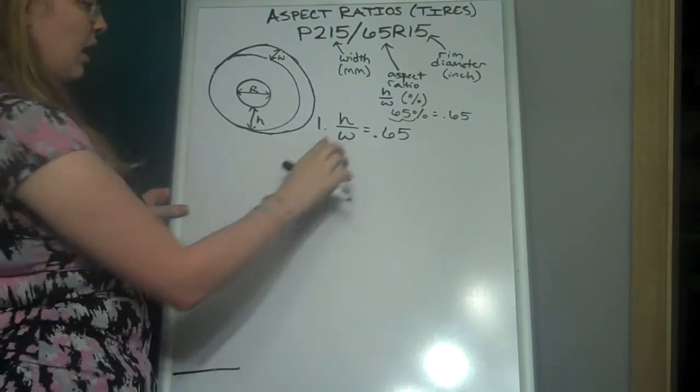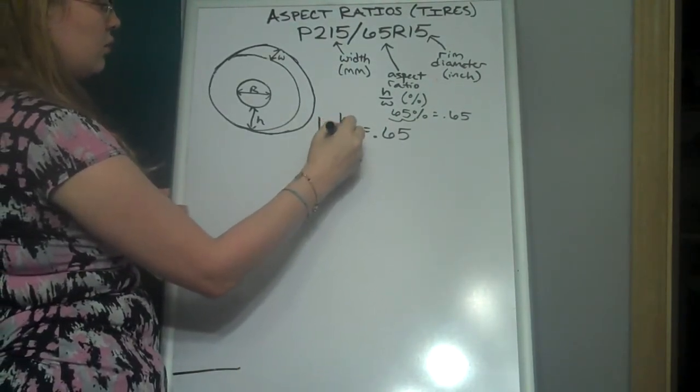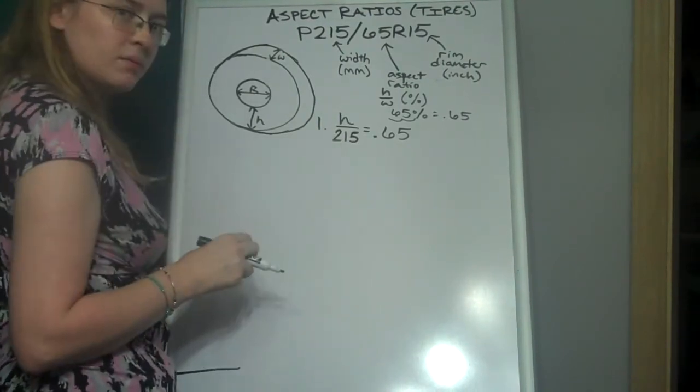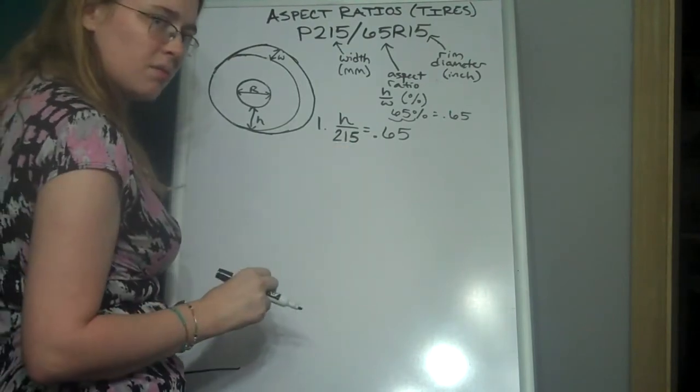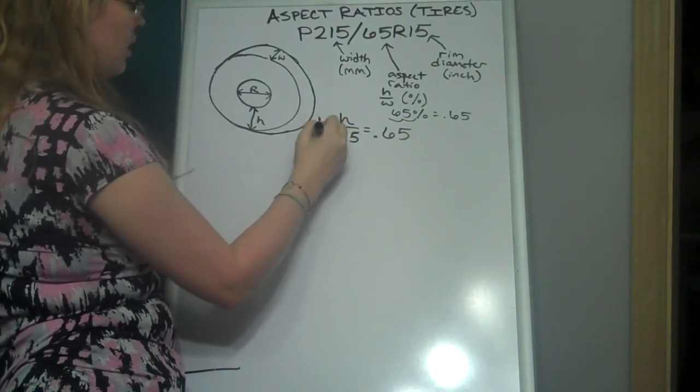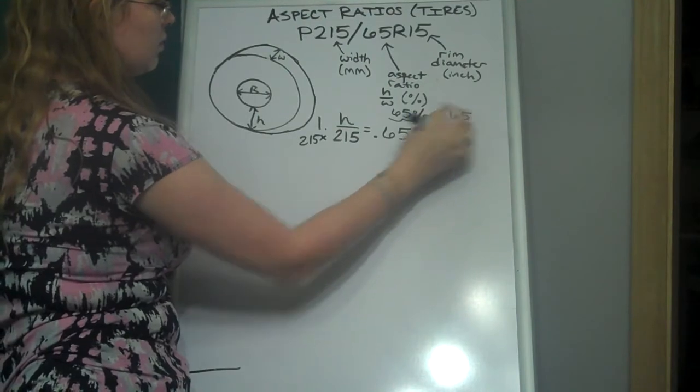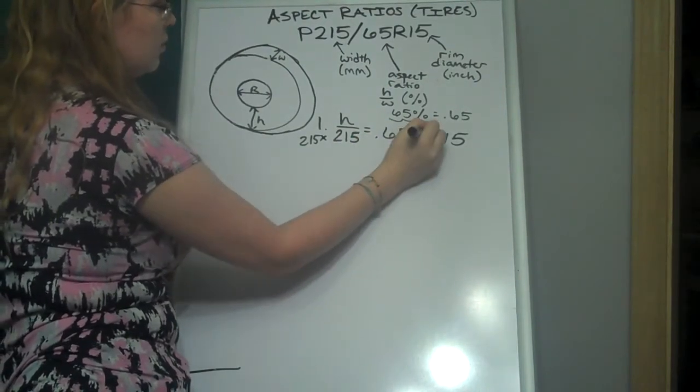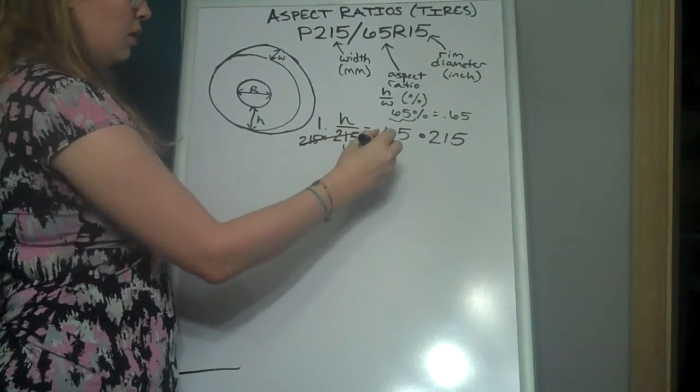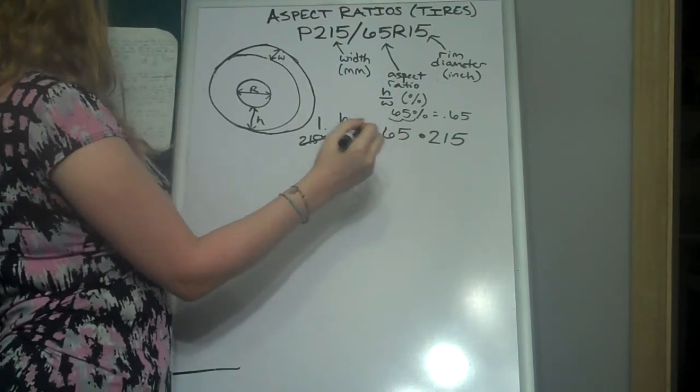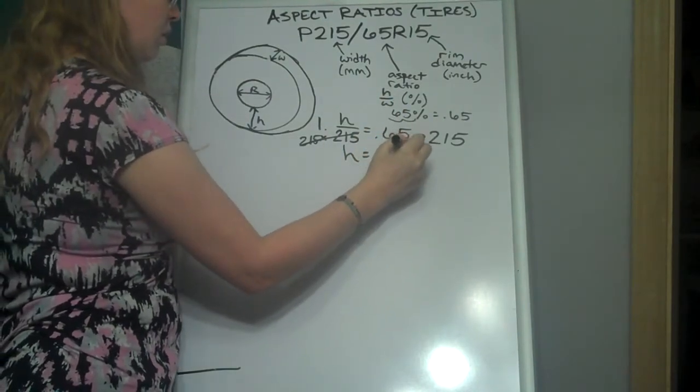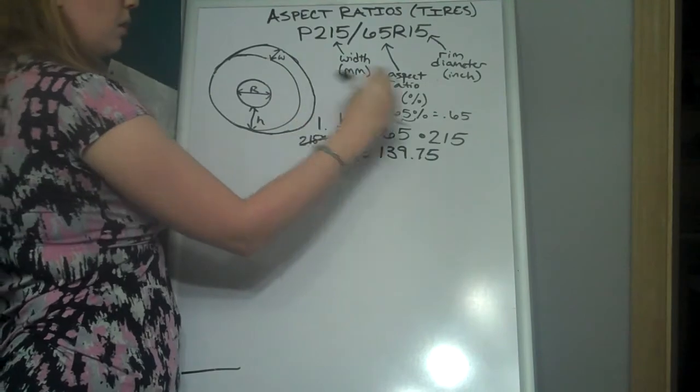Now I know that my width is 215, right? How do I find the height? How do I cancel out the 215? Well, it's being divided by 215, so I have to do the opposite, which is multiply by 215. So this cancels out. And 0.65 times 215 is 139.75. Now remember, this is in millimeters.